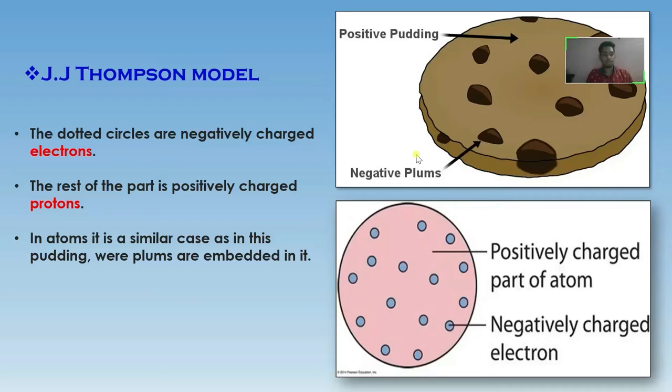J.J. Thomson model. To understand the arrangement of proton and electron in atom, Sir J.J. Thomson came up with a famous model known as J.J. Thomson model or plum pudding model.